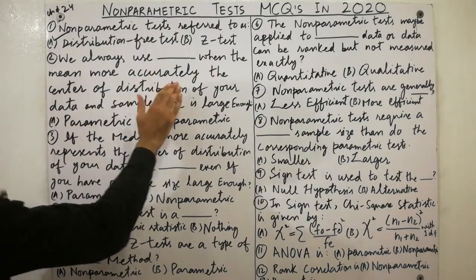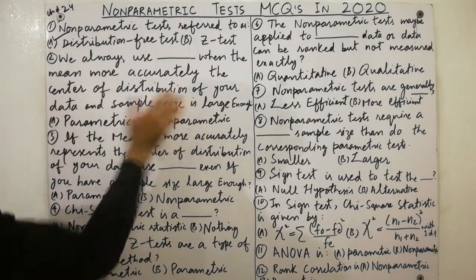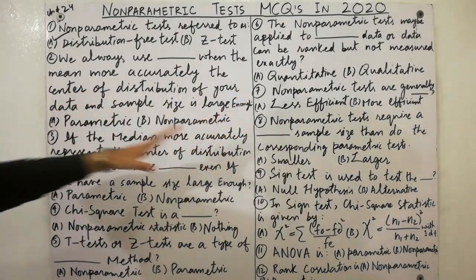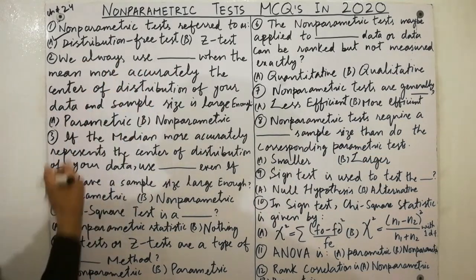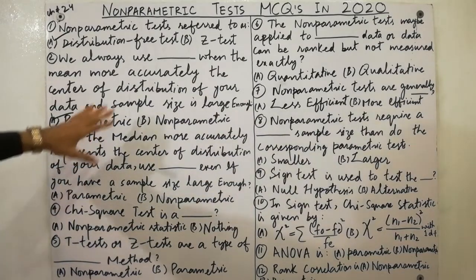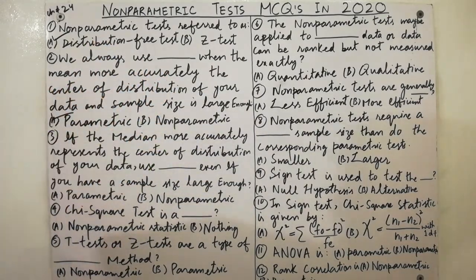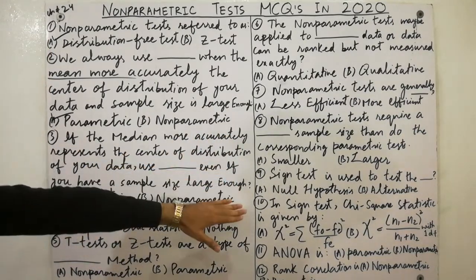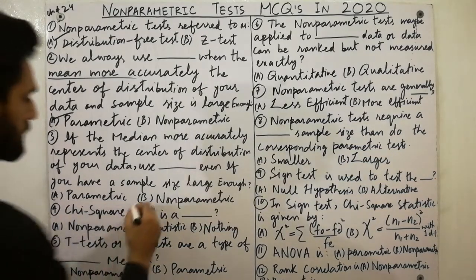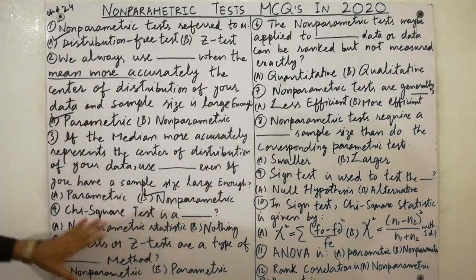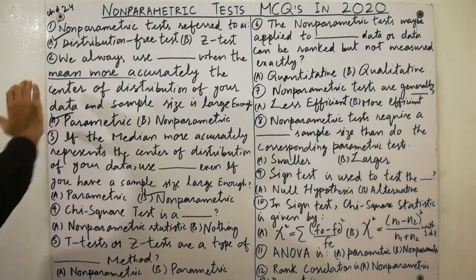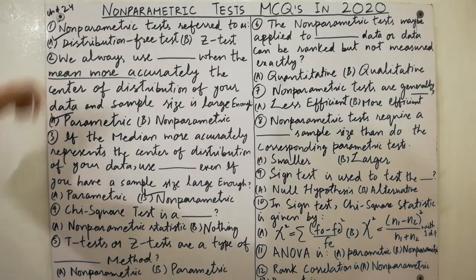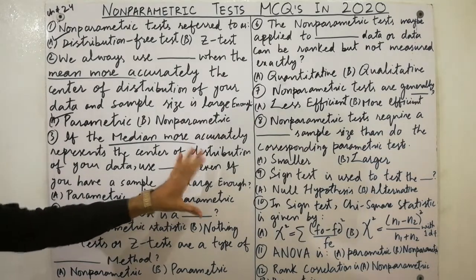We always use parametric tests when the mean more accurately represents the center of distribution of your data and the sample size is large enough. Must remember: we use parametric for mean. If the median more accurately represents the center of distribution of your data, we always use non-parametric — even if you have a large sample size. So for mean use parametric, for median use non-parametric. This is a very important secret point.